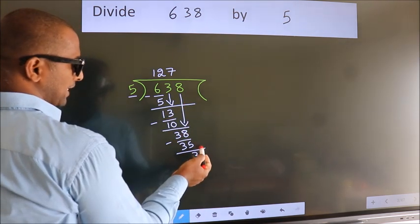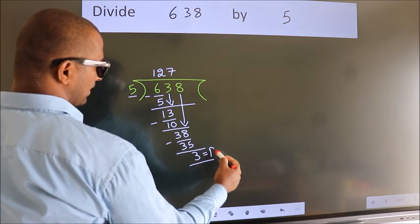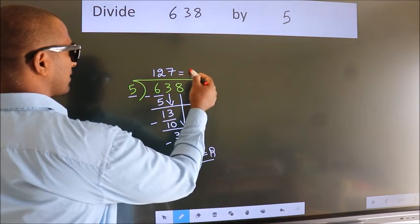No more numbers to bring down. So we stop here. This is our remainder. This is our quotient.